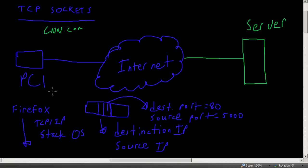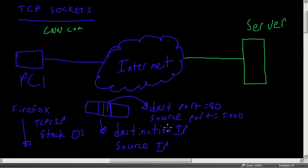So the packet flow goes from the Firefox browser to the TCP/IP stack of the operating system — basically the network portion of the OS. Then it makes a packet saying, 'I want to get some information from this destination IP.' It slaps on the source IP, puts in a destination port of 80, and a source port of 5000.